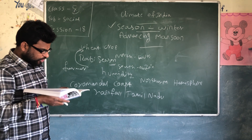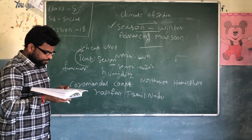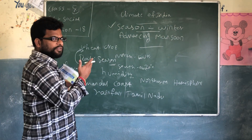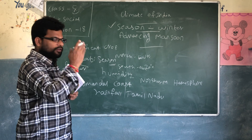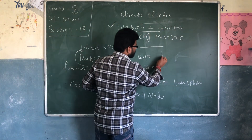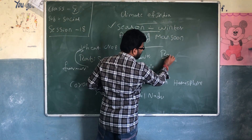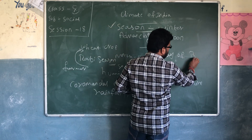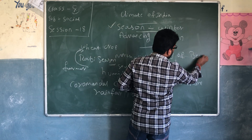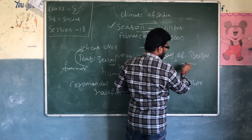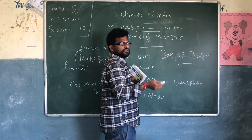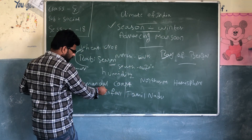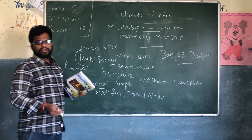As these winds take up moisture from the Bay of Bengal while crossing it, rainfall comes from the Bay of Bengal and flows towards the Coromandel Coast.